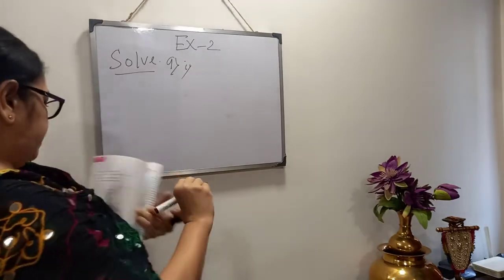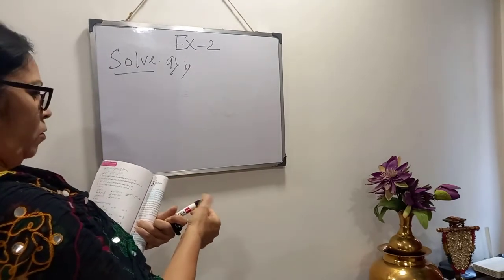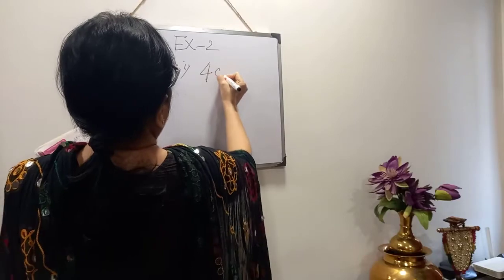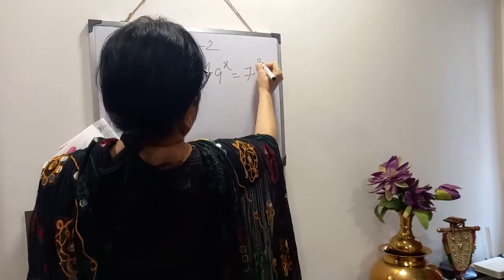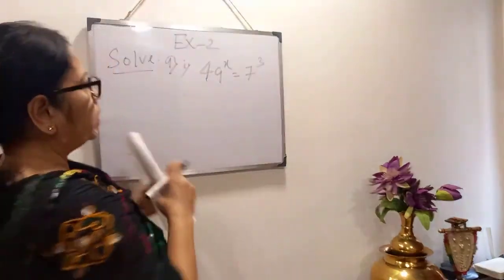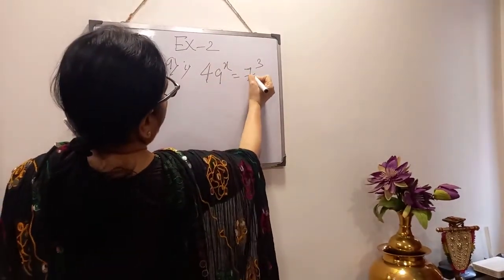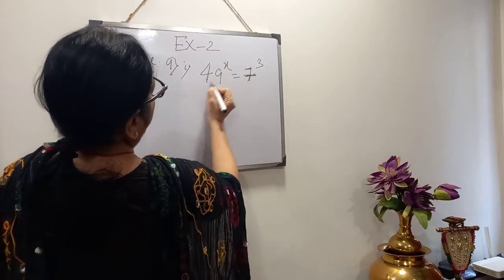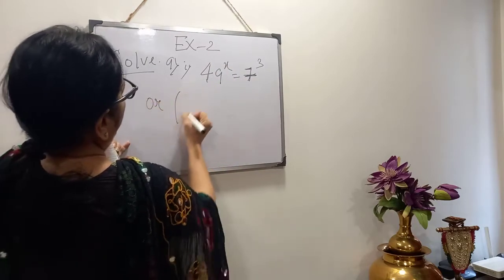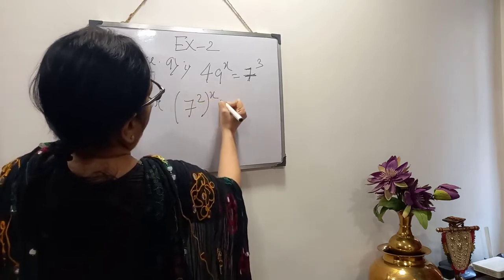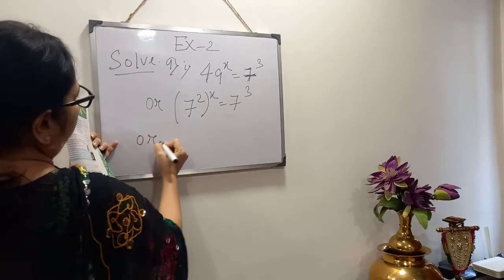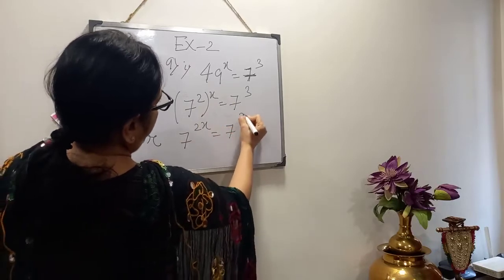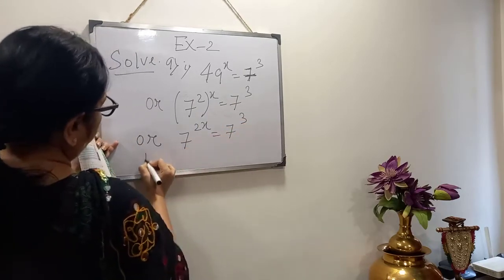Sum number 1: it is given that 49 to the power x equals 7 cubed. We have to solve by the laws of indices method. Now, what is 49? The base is 7, which is a prime number — you can't break 7 further. So 49 in terms of 7 must be broken down: 49 means 7 squared. So we can write 7 squared to the power x, and by the rule of laws of indices this becomes 7 to the power 2x. The right hand side is 7 cubed.